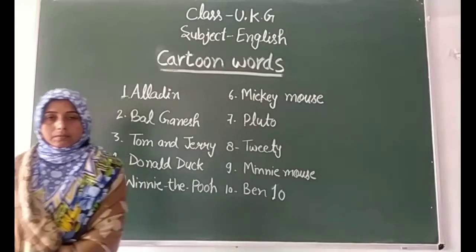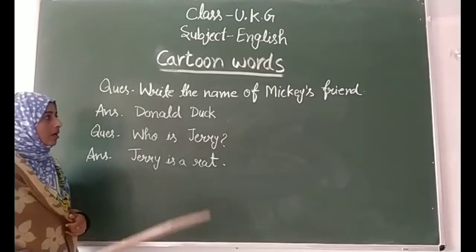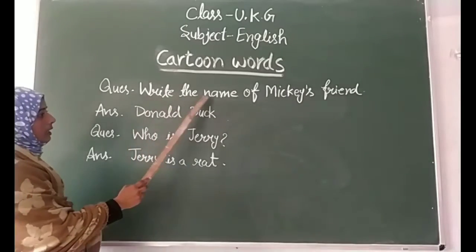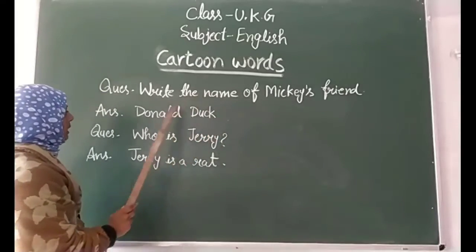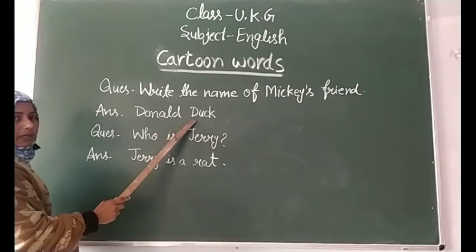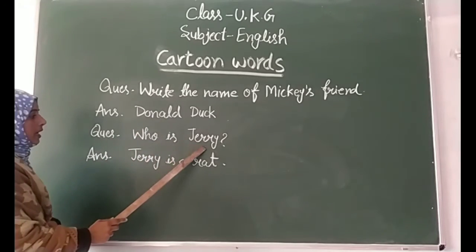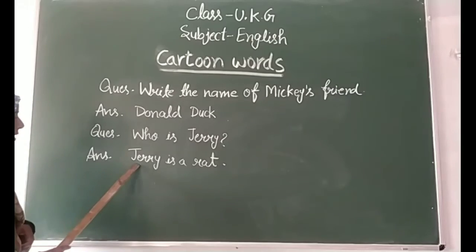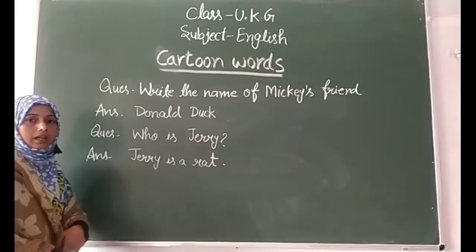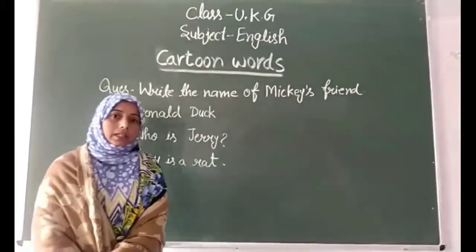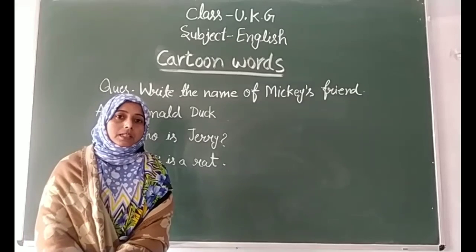Now we will learn some questions. First question: write the name of Mickey's friend. The answer is Donald Duck. Next: who is Jerry? Jerry is a rat. Now we will learn the cartoon characters' names and some more questions with the help of your mom and dad. Goodbye, children.